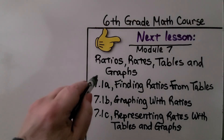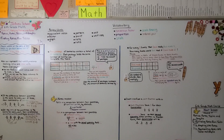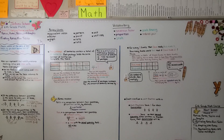Now we're finished with the first part of the lesson. We're going to move on to the second part: graphing with ratios. Do you remember how to plot points for ordered pairs from chapter 9 last year? If not, there are links in the description for a quick review. I hope you enjoy the rest of your day, and I'll see you next time!